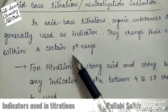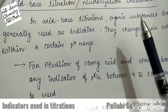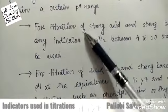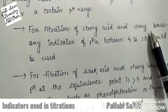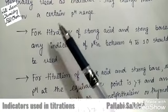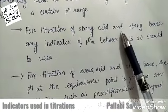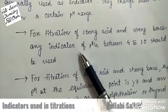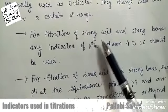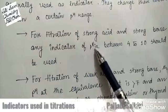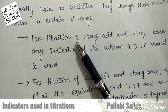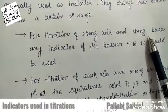We have to consider three types of titration. The first one is the titration of strong acid and strong base. In all acid-base reactions — neutralization reactions — when we consider the titration of strong acid and strong base, any indicator with pKin between 4 to 10 can be used. Here pKin is like pKa or pKb; it is the pK of the indicator.